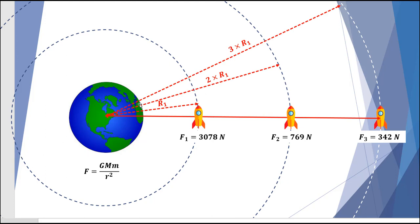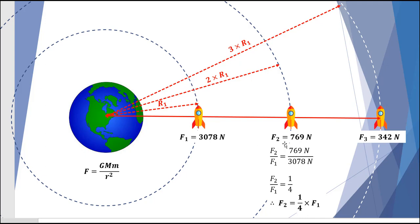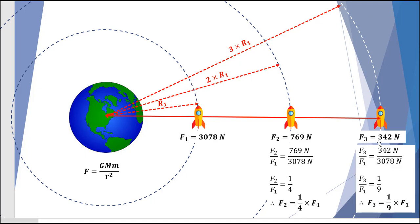Let's look at all three results. At the initial radius of 36,000 kilometres, we had a force of 3078 newtons. When we doubled that radius, holding everything else the same, we ended up with 769 newtons — considerably less. When we tripled the original radius, we got 342 newtons. The force at double the radius is a quarter of the original value. If we triple the radius, we end up with one ninth of the original force. This is called the inverse square law.